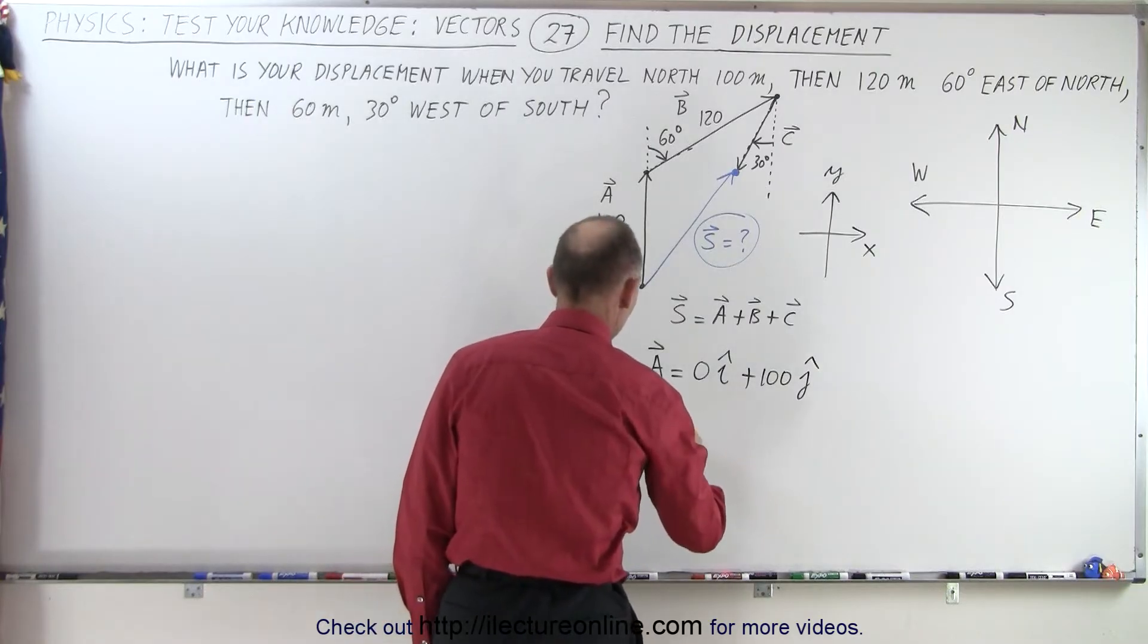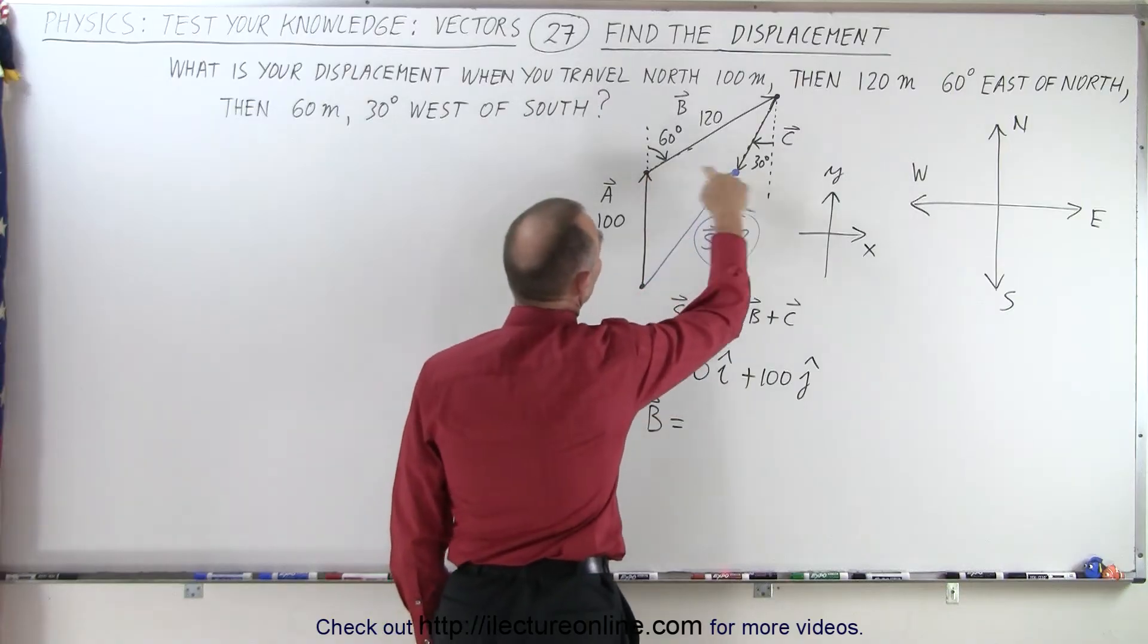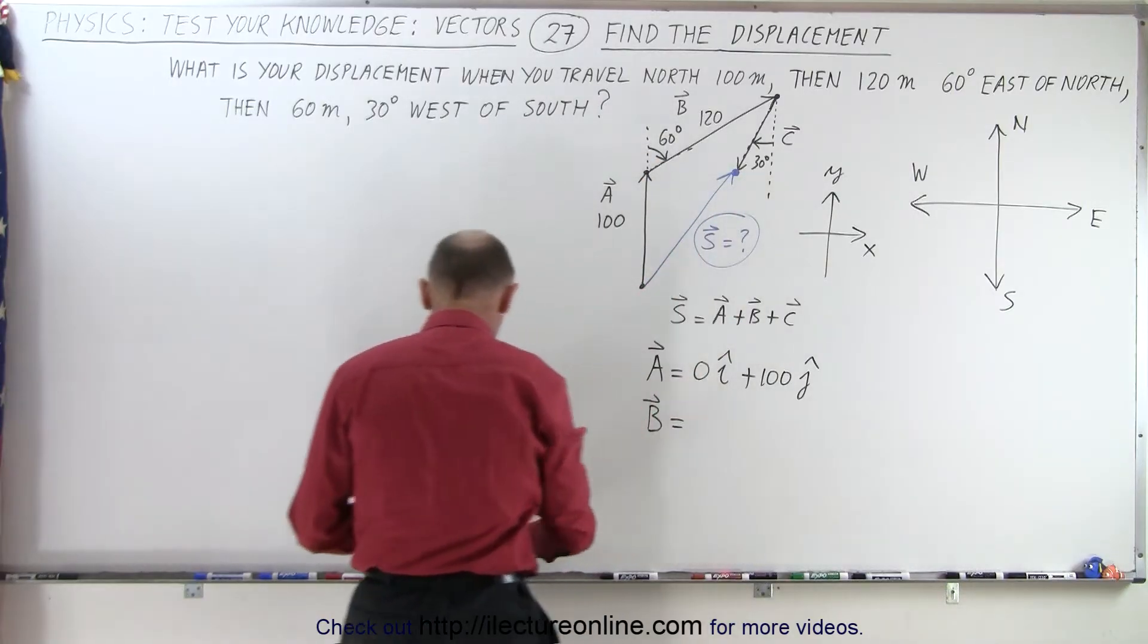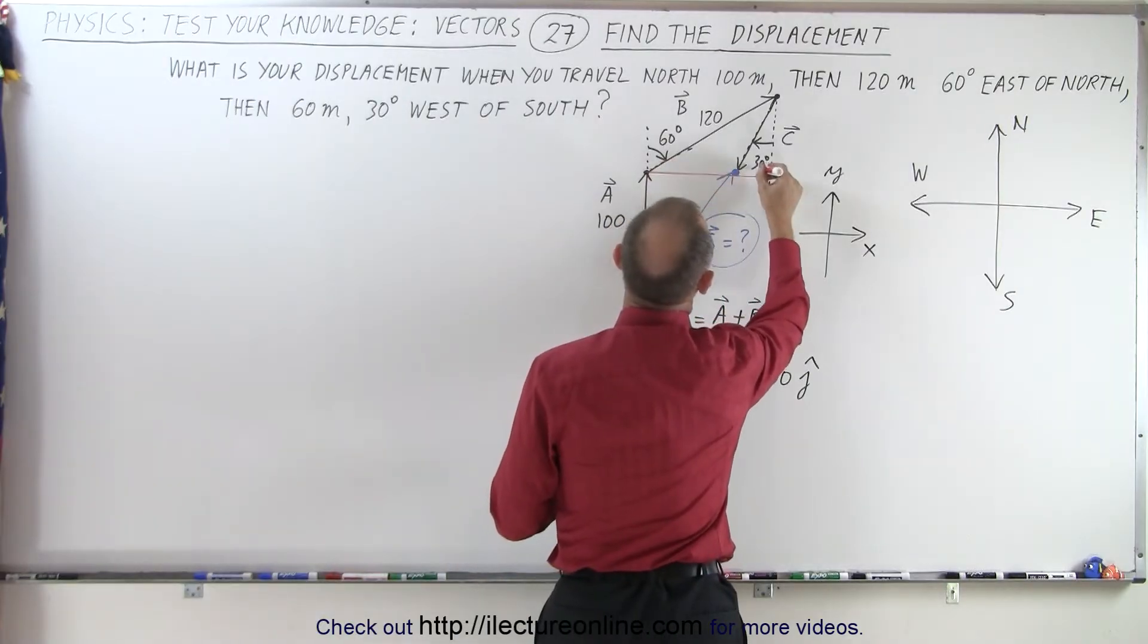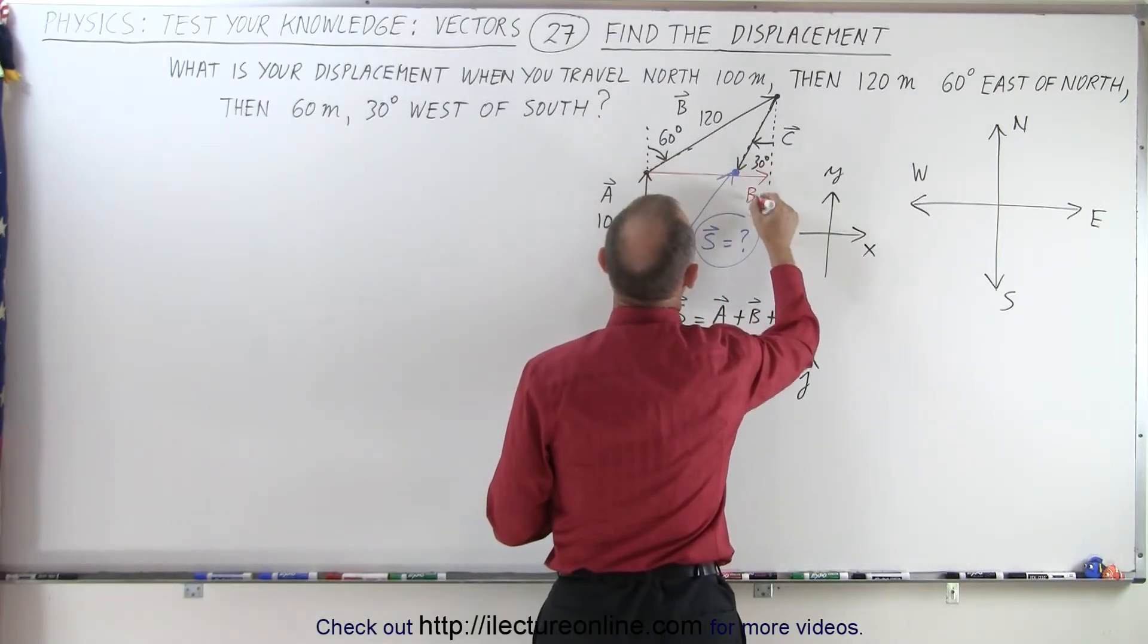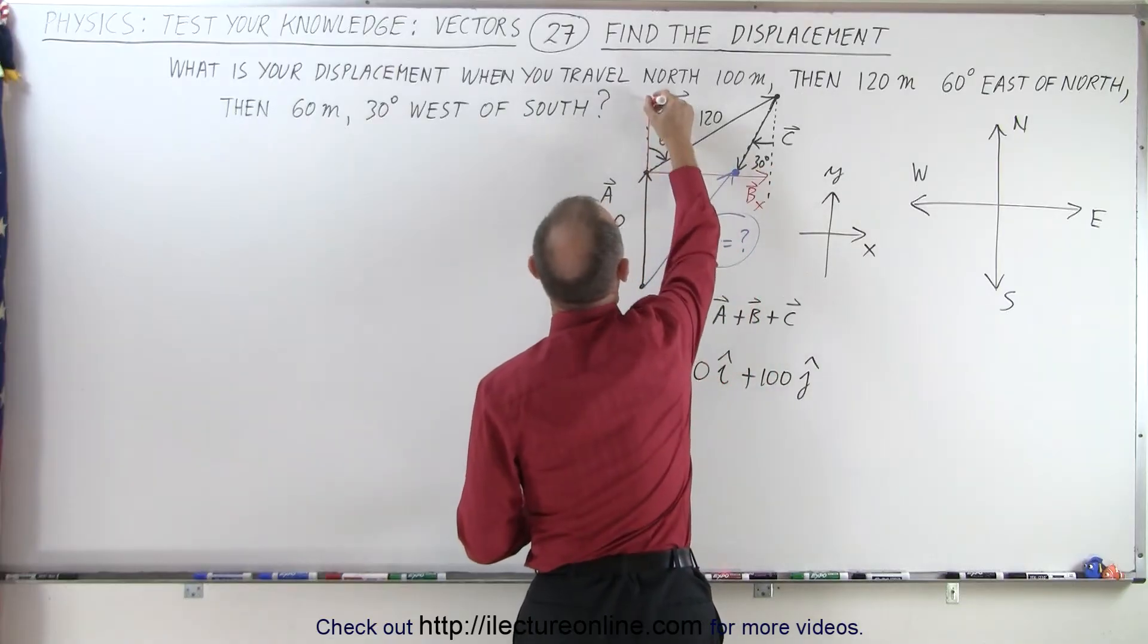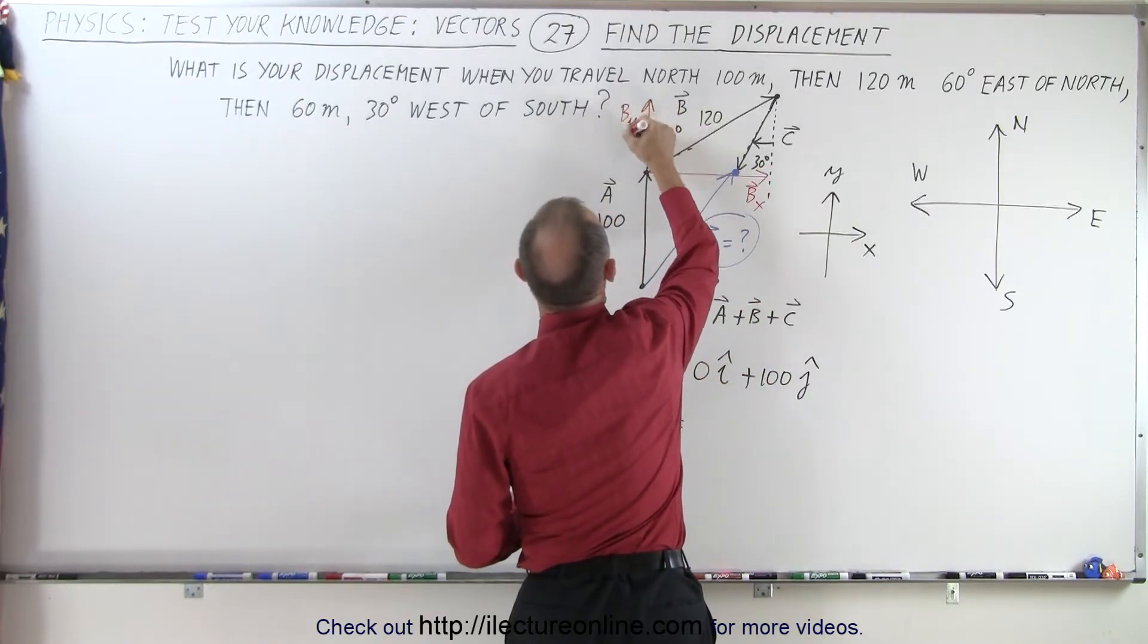Now, for vector B. B has two components. There's a component in the X direction, there's a component in the Y direction, and it's not a bad idea to draw those two components. So notice here, this would be a component in the X direction, B sub X, and a component in the Y direction, B sub Y.